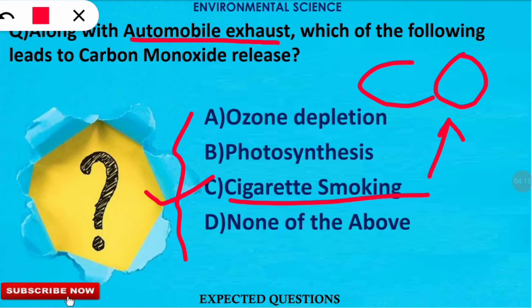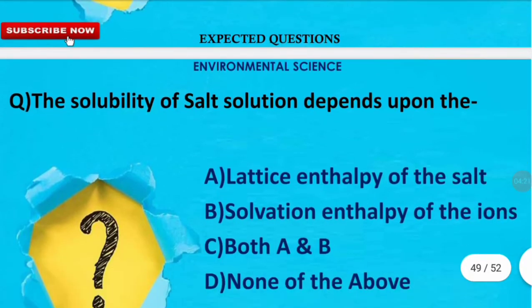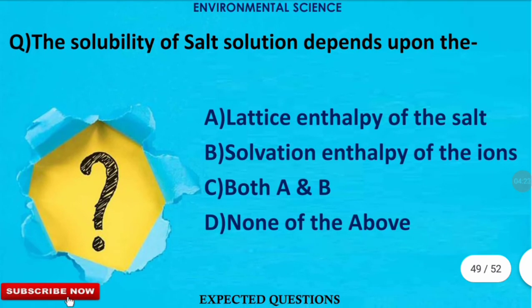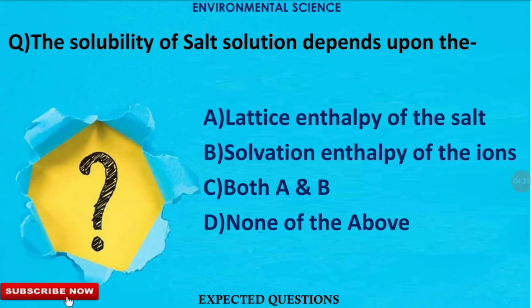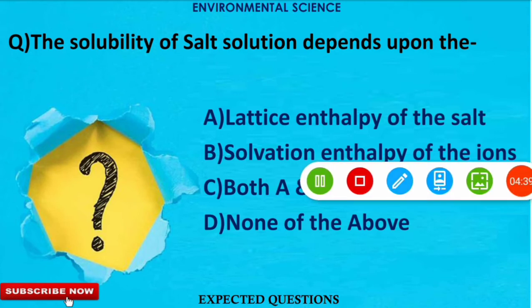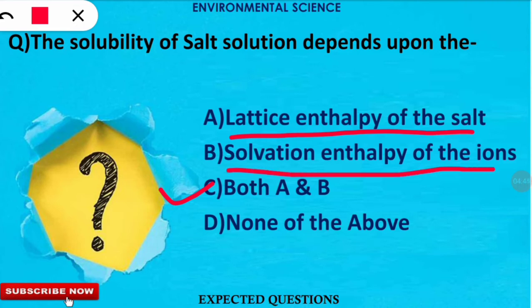The next question is: the solubility of a salt solution depends upon which of the following? The correct option is C — the solubility of a salt solution depends upon both the lattice enthalpy of the salt and the solvation enthalpy of the ions.